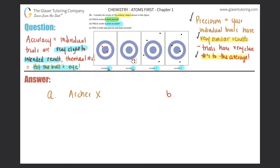It's not archer X — he was super precise but he's not hitting the bullseye. Look at archer Y — he's all over the place, not hitting the bullseye at all. Archer W is the closest to the intended target, right smack in the middle, hitting that bullseye. So archer W would be the most accurate. Just know the difference: precision is closest grouped together to each other, while accuracy is closest to your intended target.